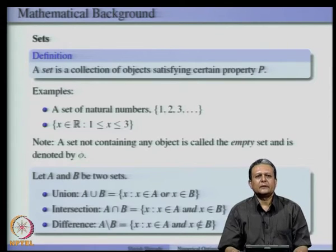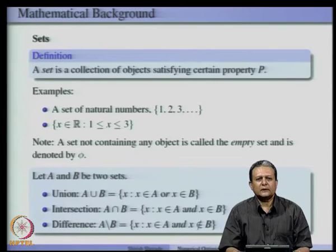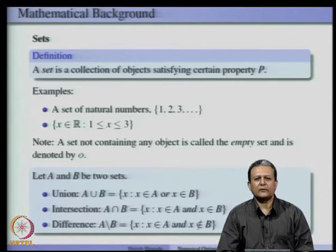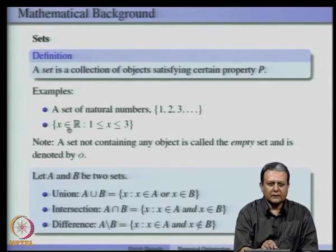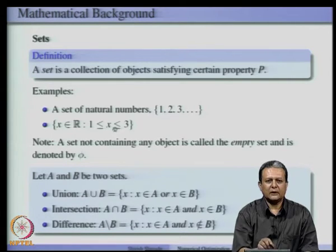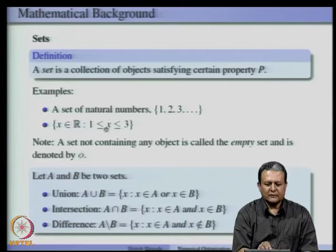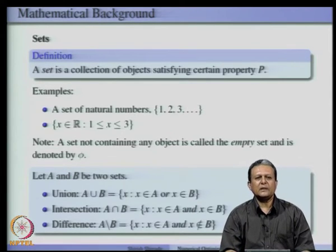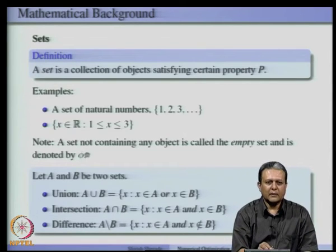We will start with the definition of sets. As all of you know, a set is a collection of objects which satisfy a certain property. For example, we can have a set of natural numbers which take the values 1, 2, 3 and so on. One could have a set of real numbers, or a set whose elements are real numbers in the range 1 to 3, both inclusive. There could be some cases where a set does not contain any object; such sets are called empty sets and we will denote them by the letter phi.